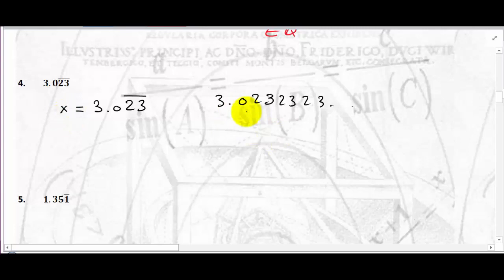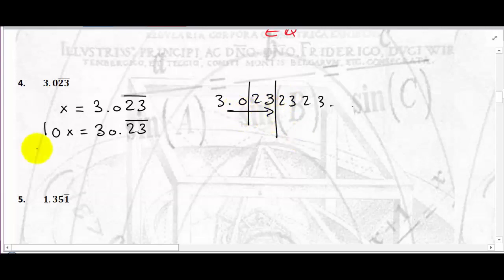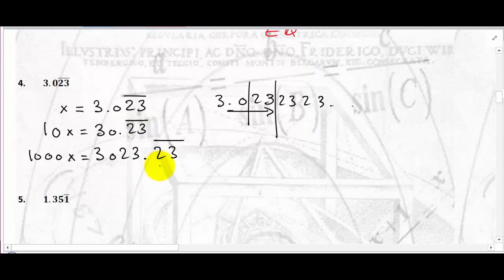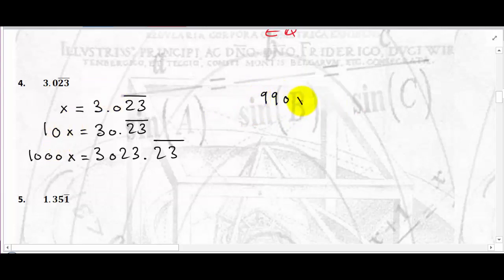So instead, I'm going to multiply x by 10: 10x equals 30.232323... And then multiply x by 1,000: 1,000x equals 3,023.232323... I have found two decimal numbers with the same digits after the decimal point. Now I can subtract: 1,000x minus 10x equals 990x, and on the right side 3,023 minus 30 equals 2,993.